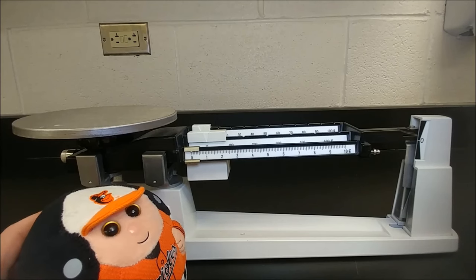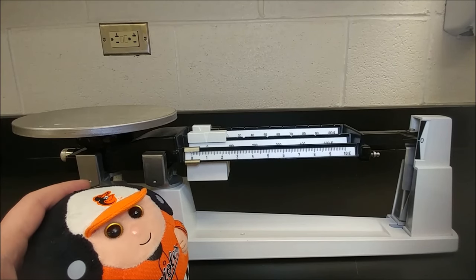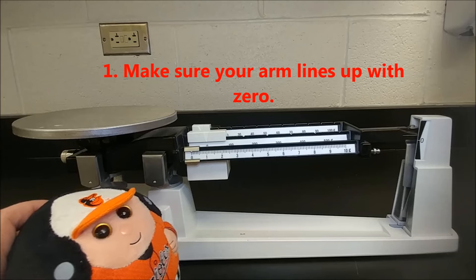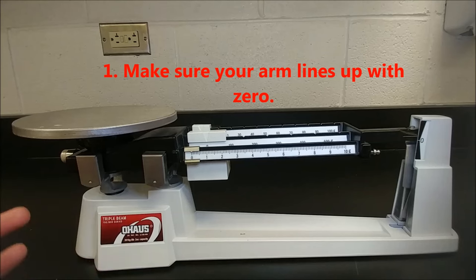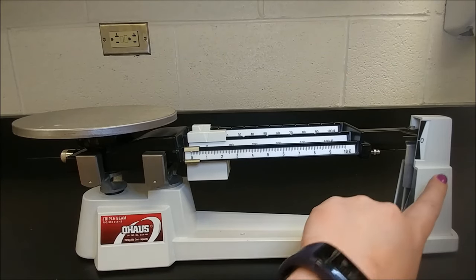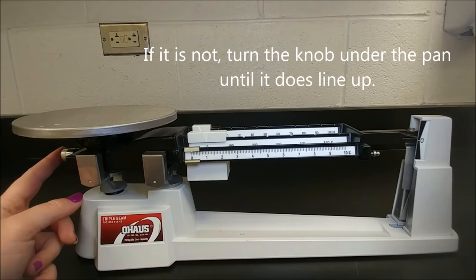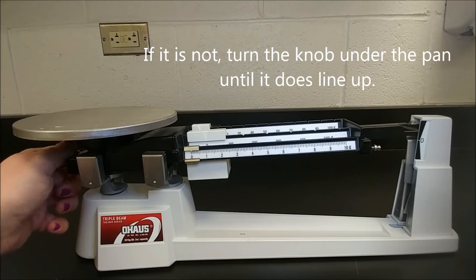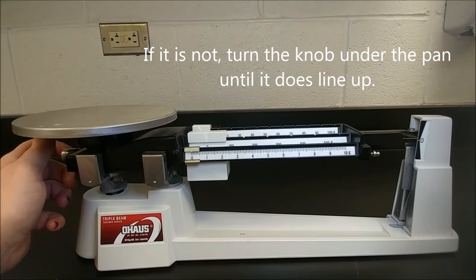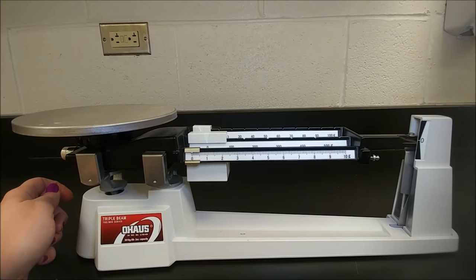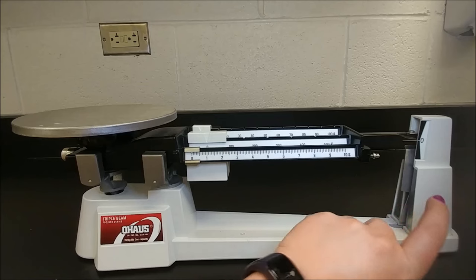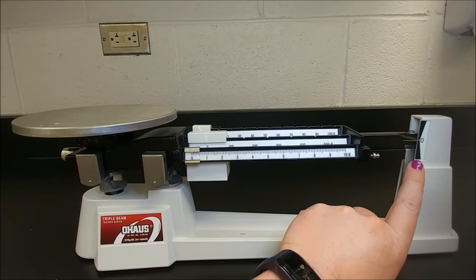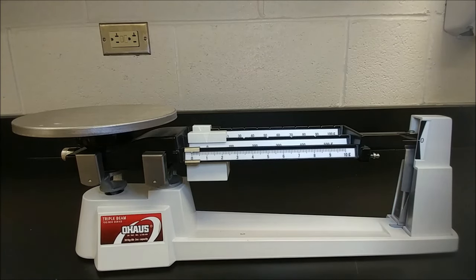To measure the amount of matter it has, we use a triple beam balance. First, we need to make sure that this line is lined up with the zero. This is known as zeroing. You can see that mine is not aligned, so I'm going to use the knob under the pan to get it to zero. Now the line on my arm and the zero are in a straight line. This is zeroed. It is officially measuring nothing.